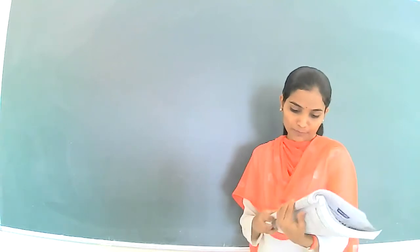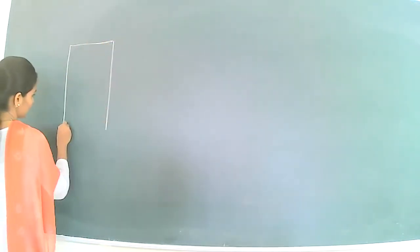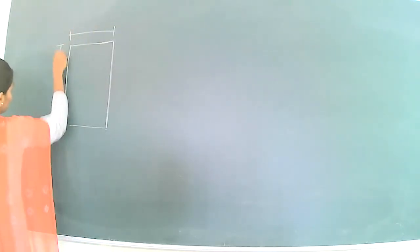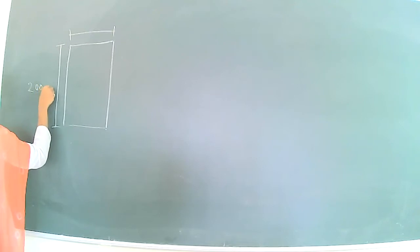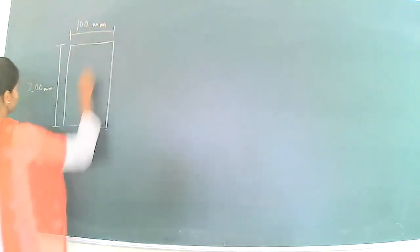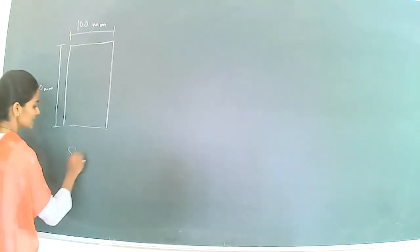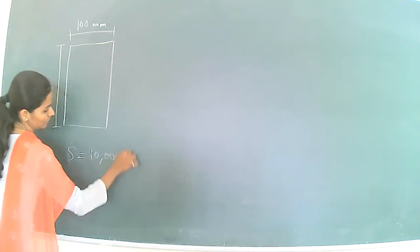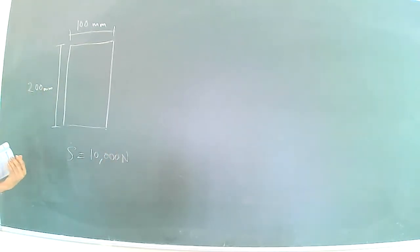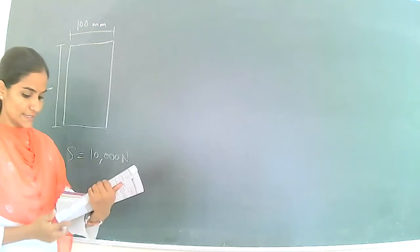We are proceeding to our next numerical. The first numerical is on a beam of rectangular section 100 mm width and 200 mm depth. If the section is subjected to a maximum shear force of 10,000 N, we also need to draw the shear stress distribution across the section.